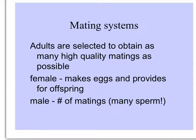When we talk about mating systems, adults of both sexes are selected to obtain as many high-quality matings as possible. What makes a high-quality mating? The female makes eggs and provides for the offspring — sometimes eggs take a lot more resources than sperm — and very often females are involved in some stage of maturation of the offspring. So for males, their only concern is the number of matings, and so many more sperm are produced than eggs.